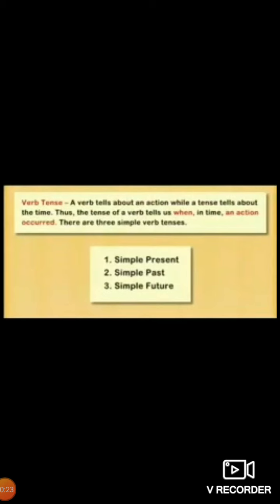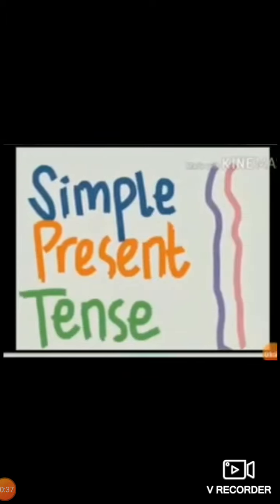The tense of a verb tells us when in time an action occurred. There are three simple verb tenses: number one, simple present tense; number two, simple past tense; and number three, simple future tense.